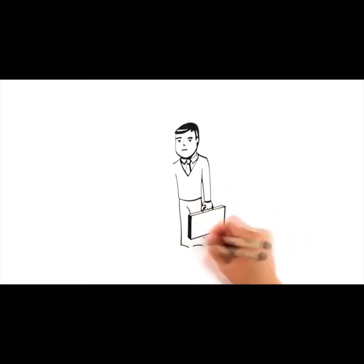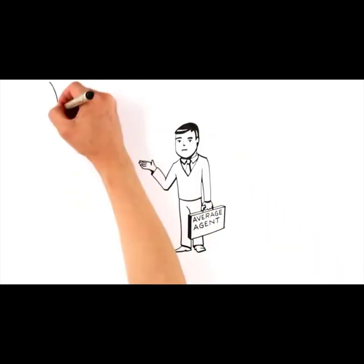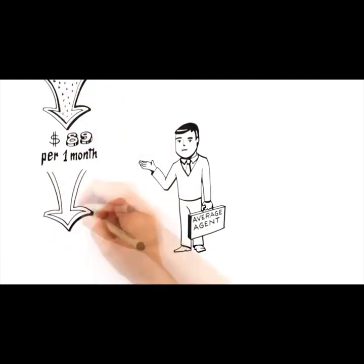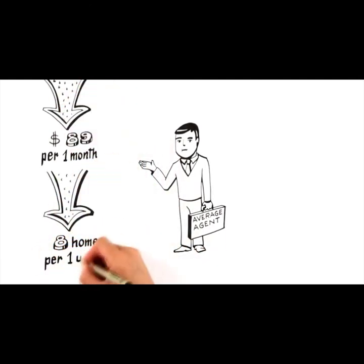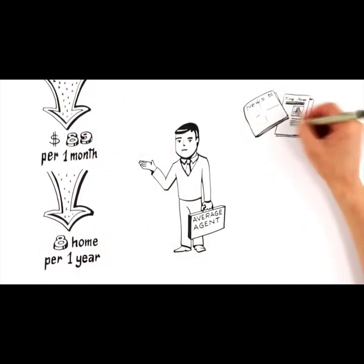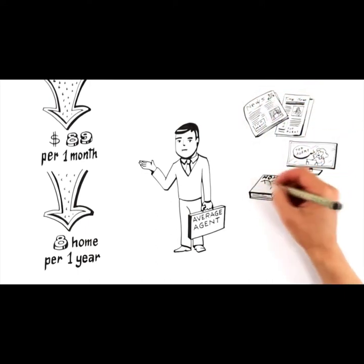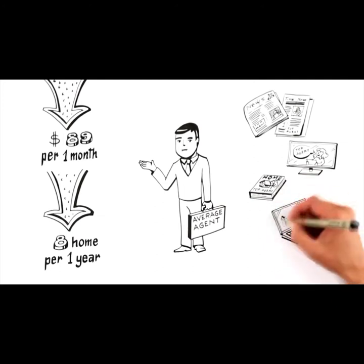Exposing your home to the market requires marketing. Research shows that the average agent only spends $89 a month on marketing and only sells an average of eight homes per year. On the other side, top agents will tout their large budgets for newspaper, TV, home magazines, and a list of hundreds of websites where they advertise.